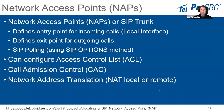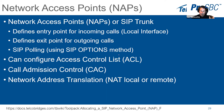Network access points — also called SIP trunks — define the entry point on the SBC, the local interface, how you will receive traffic, and where you will send traffic to. You will most likely have multiple network access points in the system. They can be configured with SIP OPTIONS polling — if the remote site answers the SIP OPTIONS message, the NAP is considered available. If the remote site doesn't answer, the NAP remains down. Some remote sites don't answer SIP OPTIONS even when they're up, so you may need to disable SIP polling.